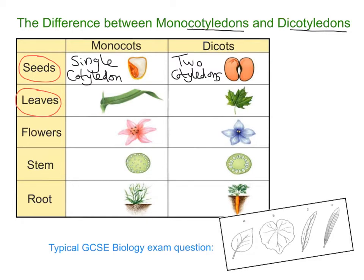In terms of the leaves, the leaves of monocots tend to be long and thin. What's really key and indicative of these are the parallel veins. When we refer to veins, we're talking about the xylem and phloem that run together in what's called the vascular bundle — I've got separate videos for that. So the key things to note are that monocot leaves are long and thin with parallel veins.